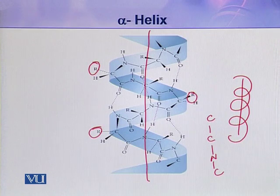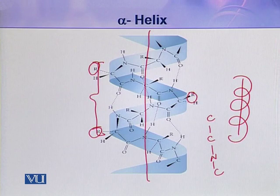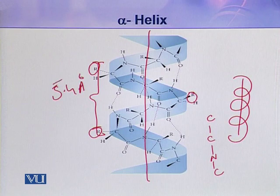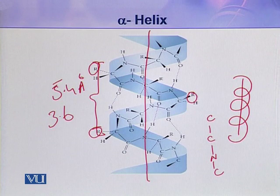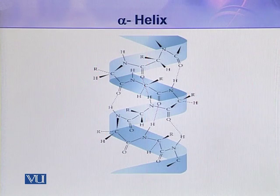One complete turn is the repeating unit of this alpha helix. It is about 5.4 angstroms long and contains about 3.6 amino acids. So there are 3.6 amino acids in a single turn of alpha helix and the length of this single turn is about 5.4 angstroms.